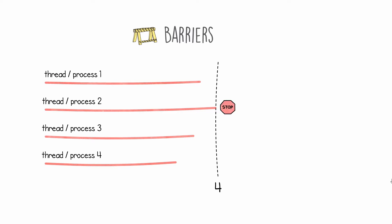When this happens the thread is blocked — it is taken out of execution. It waits for all the other threads to arrive at that same line of code, the barrier.wait. And the internal count of the barrier goes down by one. In this example we go down to three.